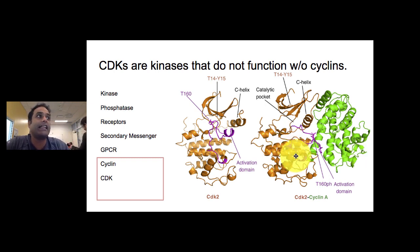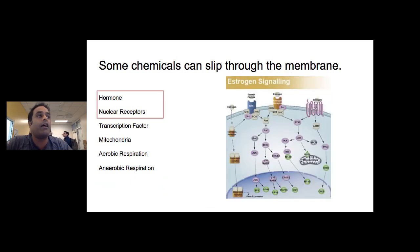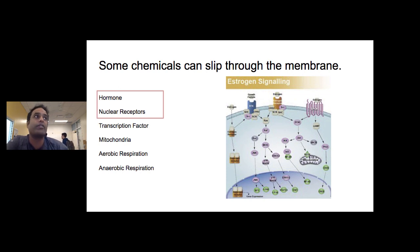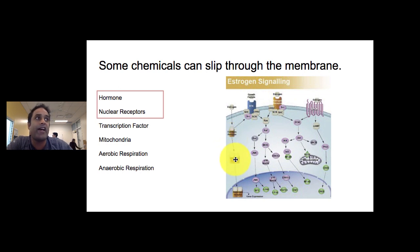Here is what the actual cyclin-CDK complex looks like — the CDK here, the cyclin here, and together they form the active site. Another kind of signal is the nuclear receptor, which is a bit different from other receptors. Estrogen is a great example: estrogen can bypass the cell membrane because it is small and non-polar, and it will bind to an estrogen receptor.